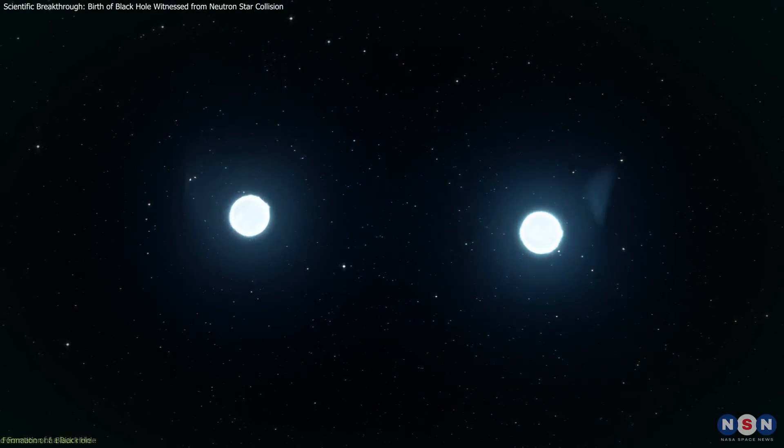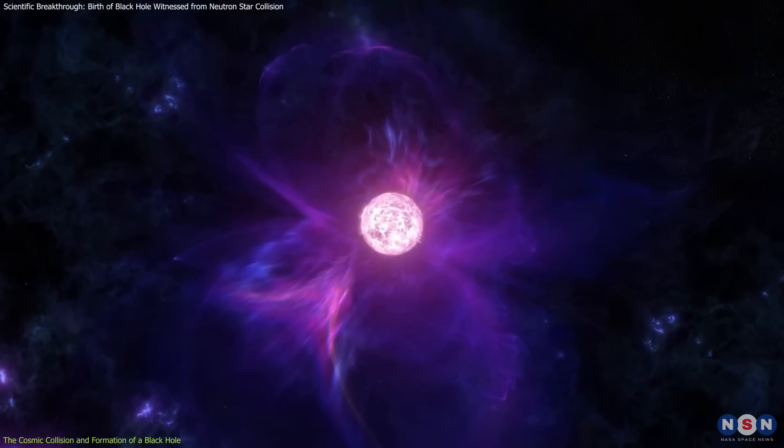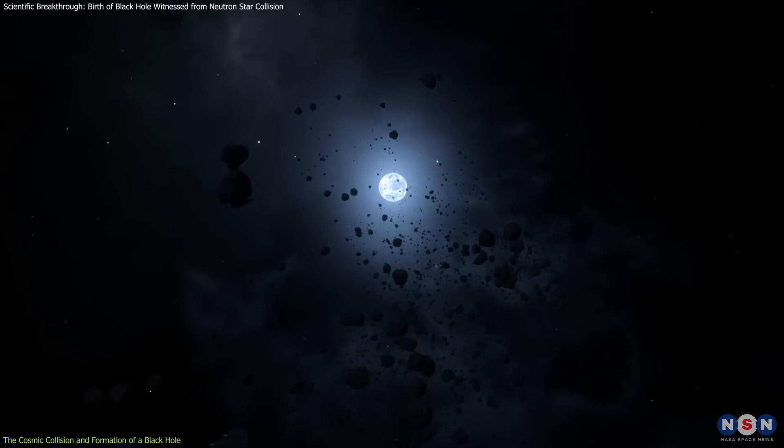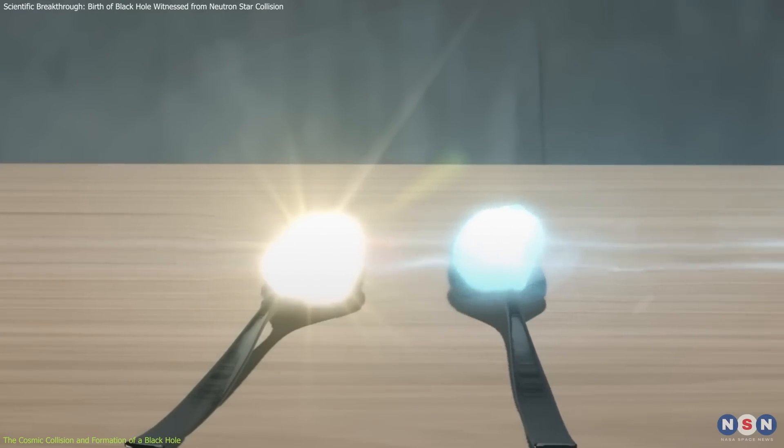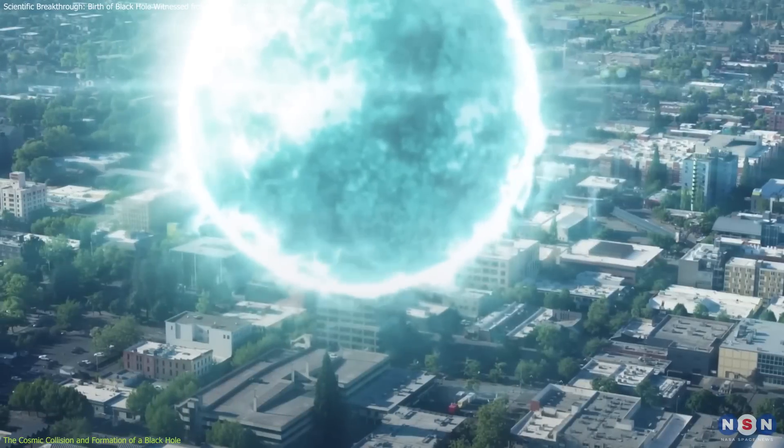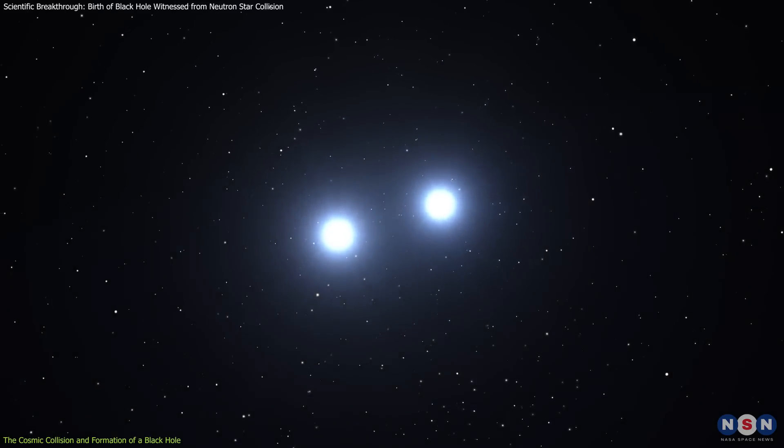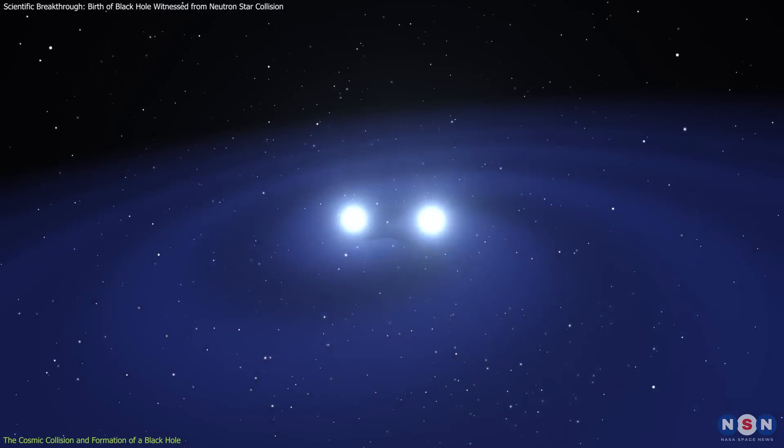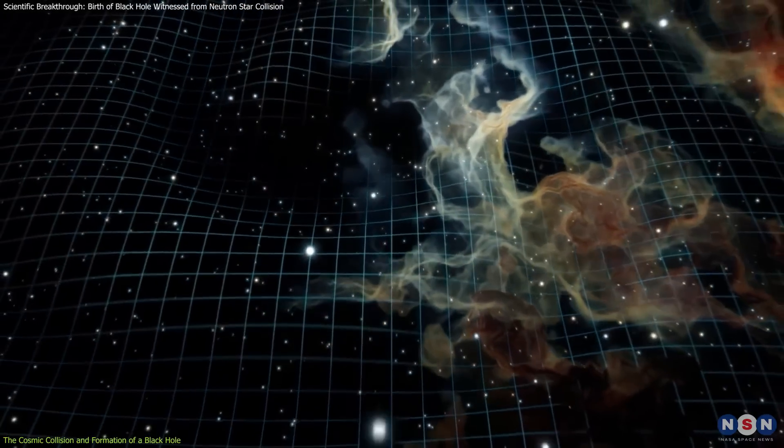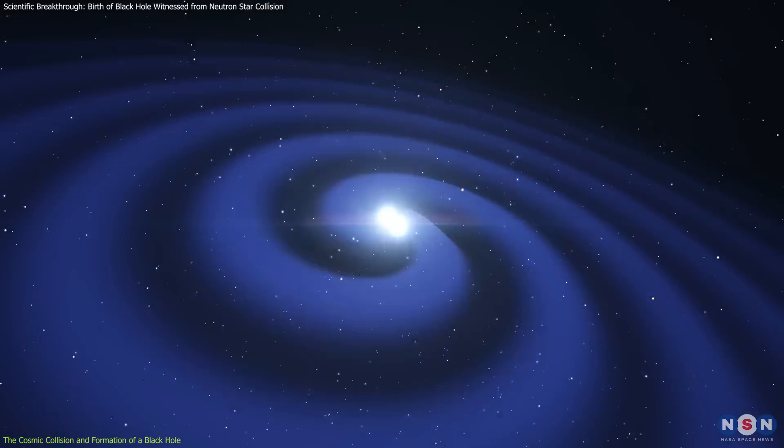The story begins with two neutron stars, remnants of massive stars that exhausted their nuclear fuel and collapsed. Neutron stars are no ordinary objects. They're like cosmic fossils, incredibly dense, so much so that just a teaspoon of neutron star material would weigh about as much as a mountain. When two of these neutron stars are in close orbit, they begin to spiral toward each other, losing energy in the form of gravitational waves. These ripples in spacetime are like the sound waves of the universe, marking the intense gravitational pull between these dense stars.